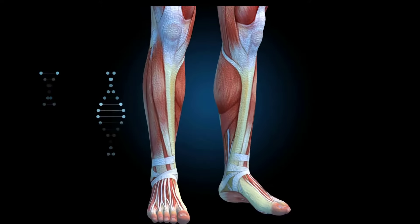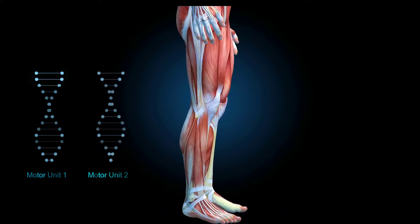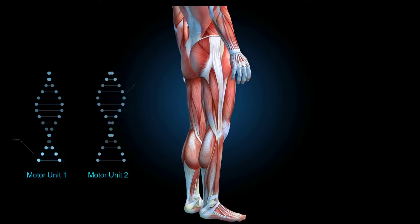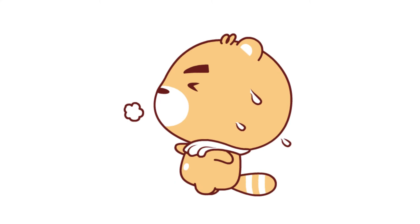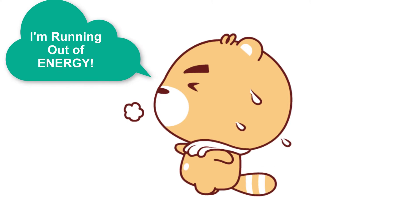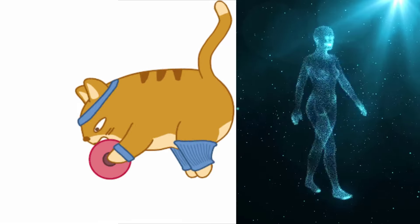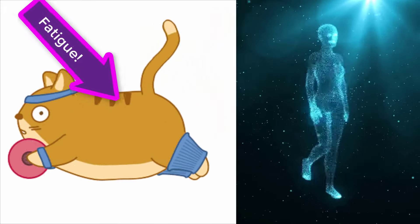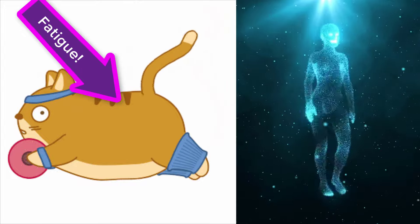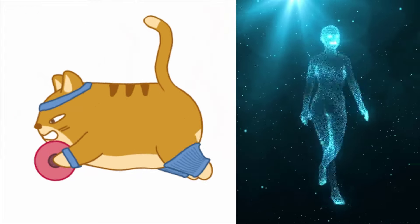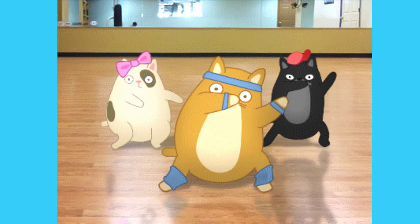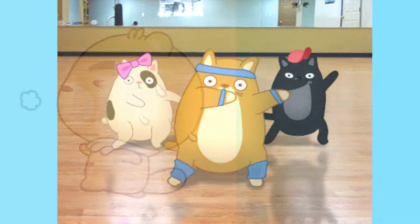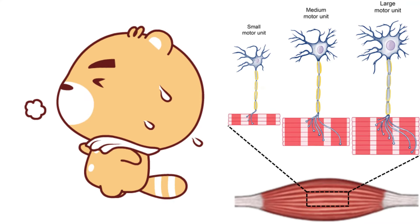When necessary, the maximum number of motor units in a muscle can be recruited simultaneously, producing the maximum force of contraction for that muscle. But this cannot last for very long because of the energy required to sustain a muscle contraction. To prevent complete muscle fatigue, motor units are generally not all simultaneously active, but instead some motor units rest while others are active, which allows for a longer muscle contraction. The nervous system uses recruitment as a mechanism to effectively utilize skeletal muscles.